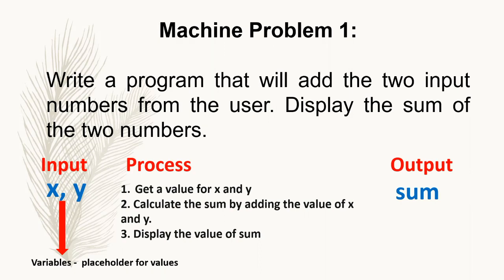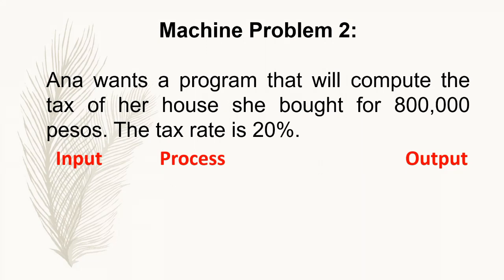We can also say: print the value of sum, or write the value of sum. That's how simple it is to make an IPO chart. IPO chart means Input-Process-Output. Take note — the IPO chart is considered an algorithm to solve a problem.